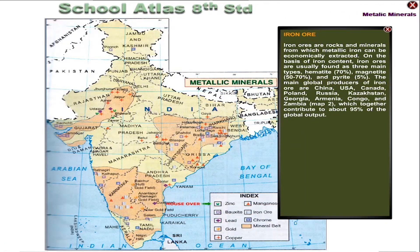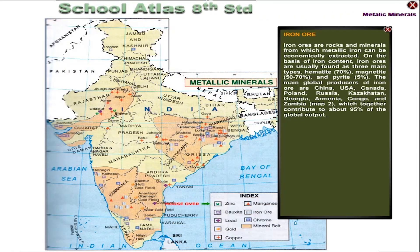Iron Ore. Iron ores are rocks and minerals from which metallic iron can be economically extracted. On the basis of iron content, iron ores are usually found as three main types: hematite (70%), magnetite (50–70%) and pyrite (5%). The main global producers of iron ore are China, USA, Canada, Poland, Russia, Kazakhstan, Georgia, Armenia, Congo and Zambia, which together contribute to about 95% of the global output.